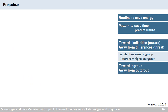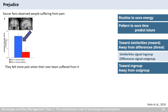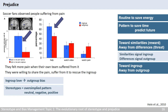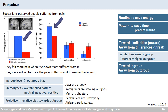Here is another interesting study. Soccer fans observed people suffering from pain. They felt more pain and empathy when their own team suffered from it, and were even willing to share the pain — the 'help condition' on the graph — and suffer from it themselves to rescue their in-group members. Prejudice is the consequence of this bias. We can love our in-group so much that we end up disliking other groups. Stereotype is an oversimplified pattern about a group, and can be neutral, or both negative and positive. Prejudice pushes it further by having a negative attitude towards an out-group. We have plenty of such prejudices: Jews are greedy, immigrants are stealing our jobs, men are cheaters, bankers are untrustworthy, or Africans are lazy.